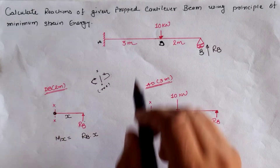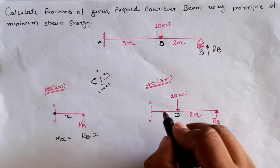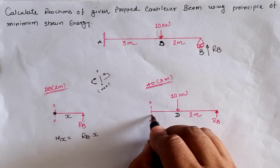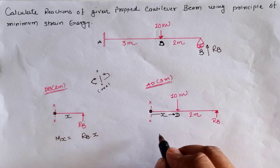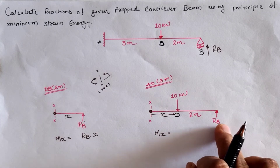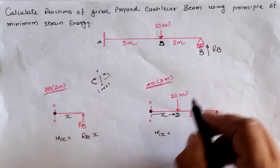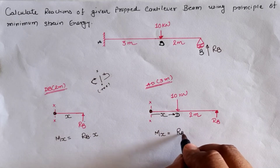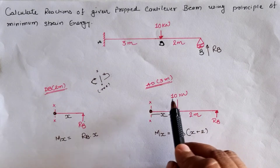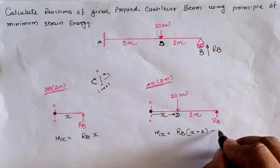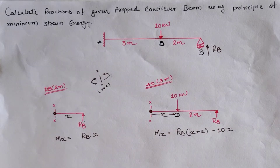For segment AD, taking D as the origin, the distance from D to the section is x. The moment at this location is RB into (x + 2), since the perpendicular distance from B to this section is (x + 2) and anticlockwise in the right-hand direction is positive. For the 10 kN load, it is clockwise, so it is negative: minus 10 into x. The moment is thus M = RB(x + 2) − 10x.